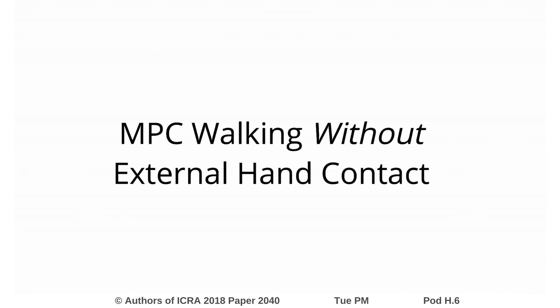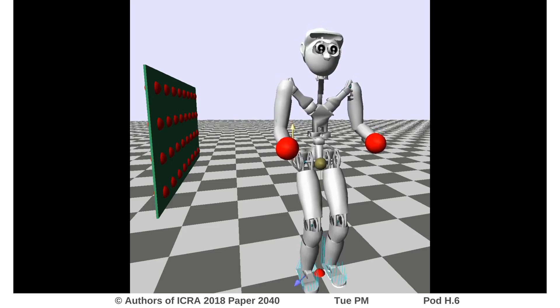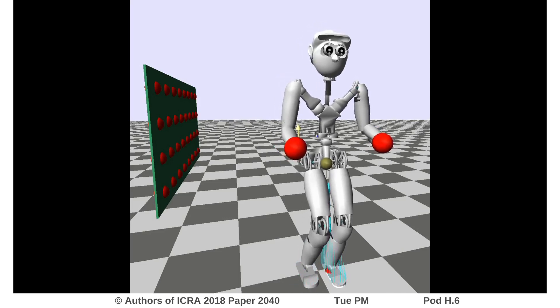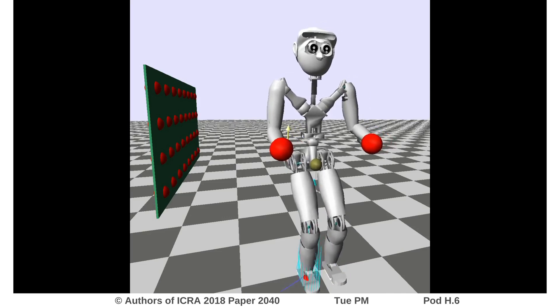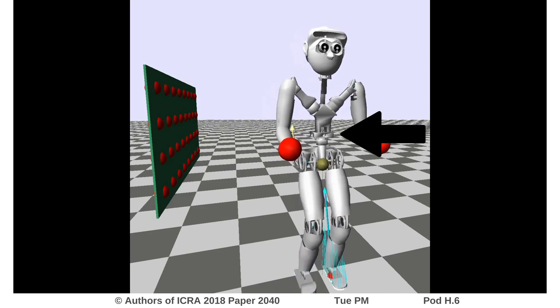Results are shown in simulation on a full humanoid model where task-based trajectories come from an MPC solver and are then resolved into torques using a QP-based inverse dynamics solver.